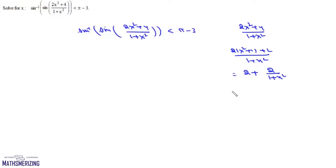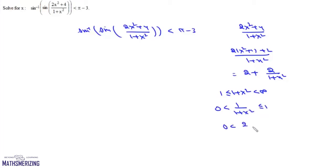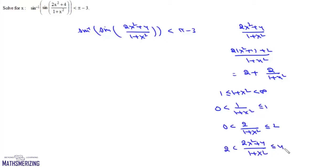We know that 1 + x² lies between 1 and infinity. Taking the reciprocal, 1/(1 + x²) lies between 0 and 1. Multiplying by 2, we get 2/(1 + x²) in the interval (0, 2]. Adding 2, we find that (2x² + 4)/(1 + x²) is greater than 2 but less than or equal to 4.